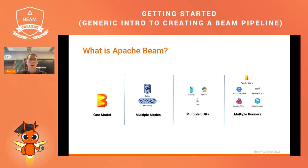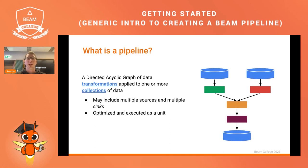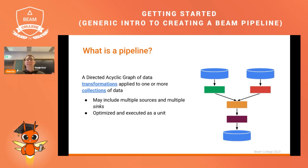The Direct Runner lets you test or debug your data processing pipeline on your workstation. When we talk about Apache Beam we often talk about data pipelines, which are represented as a graph of steps connected to each other. The data flows through the pipeline from one step to the next, being transformed along the way. Each step is a self-contained unit of work that takes one or multiple inputs and produces one or multiple outputs.